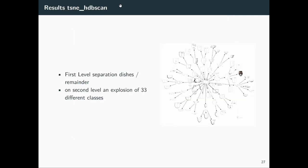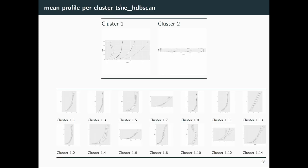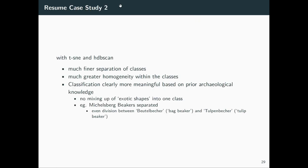While with T-SNE and HDBSCAN, on the first level the dishes are separated, and then on the second level we get an explosion of different clusters. 33 clusters, and if you look to them, they are very homogeneous, the resulting shapes. So that's quite a nice result. With T-SNE we get a good classification that also makes archaeological sense. Michelsberg beakers are separated, and the Beutelbecher and the Tulpenbecher specific forms are also separated in individual clusters, which is from an archaeological perspective very nice.